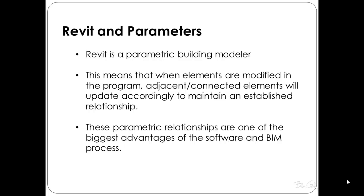Revit is a parametric building modeler, which means that when elements are modified within the project — things like walls and roofs — the adjacent or connected elements will update accordingly and maintain any established relationships you have set up. For example, if walls become longer or taller, the windows and doors connected to them will update as you have told the program. They will maintain spacing between each other and heights off the floor. Once these parametric relationships are set up, you don't have to go in and tweak things individually, and this is really one of the biggest advantages of Revit and the whole BIM process.